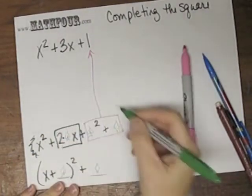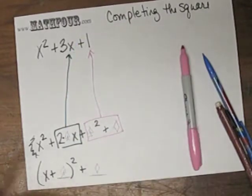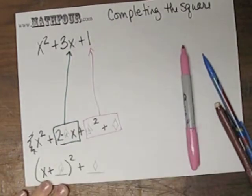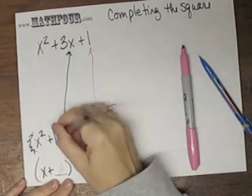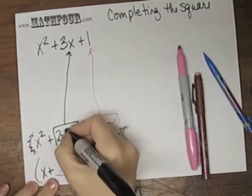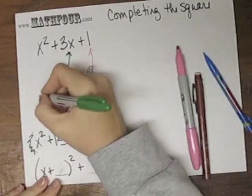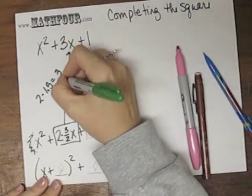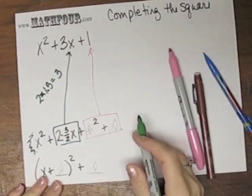And then we've got this guy that's supposed to give us 3x. So 2 times the spades gives us 3. So 2 times what is 3? Well, that's 1 and a half, or I'm going to fill in here 3 halves. And make a note over here. 2 times 1.5 equals 3. So that's 3 halves.